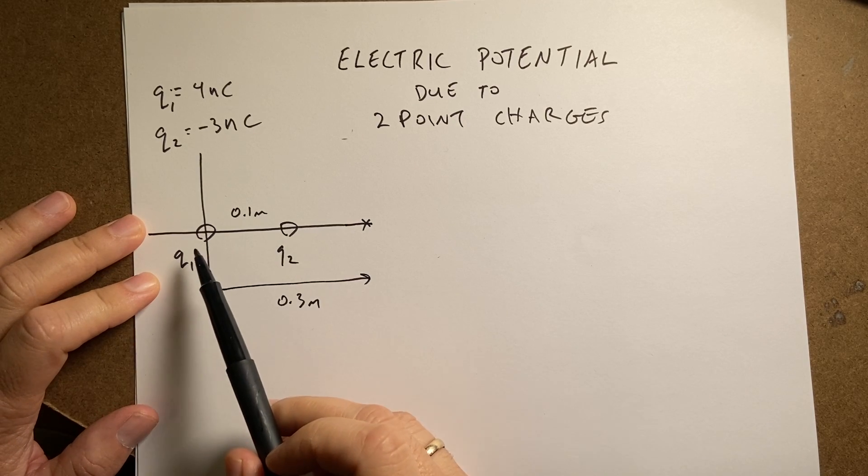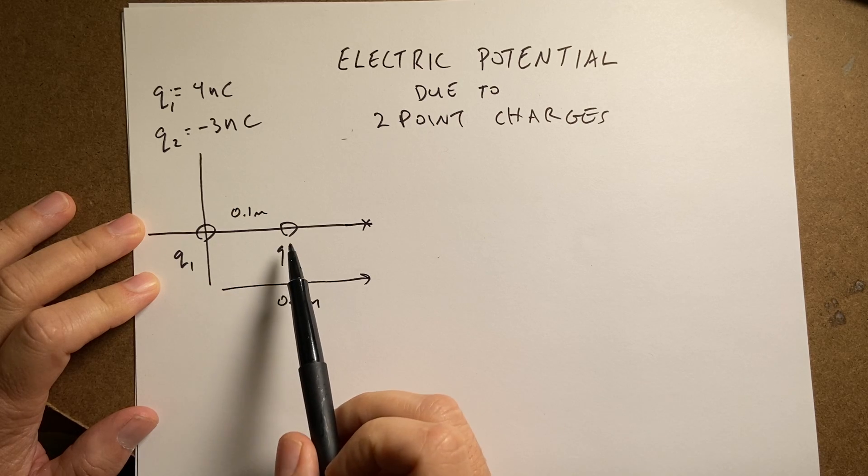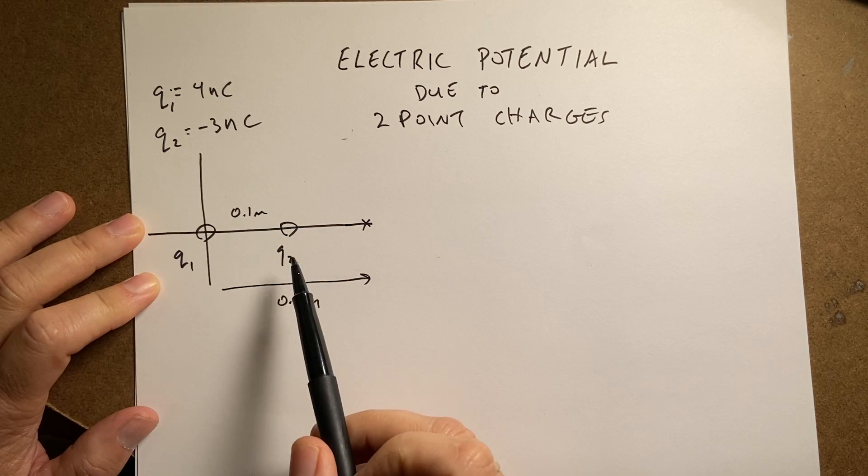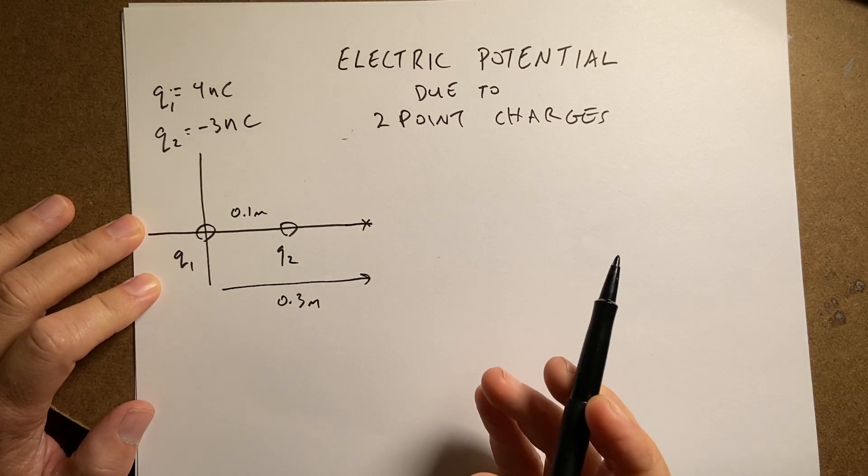Okay, so suppose I have two point charges, Q1 and Q2. Q1 is 4 nC, Q2 is negative 3 nC. I just made this stuff up, you know.